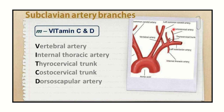Another branch is the dorsal scapular artery. These branches can be remembered easily using the mnemonic VIT CD: V for vertebral artery, I for internal thoracic artery, T for thyrocervical trunk, C for costocervical trunk, and D for dorsal scapular artery.